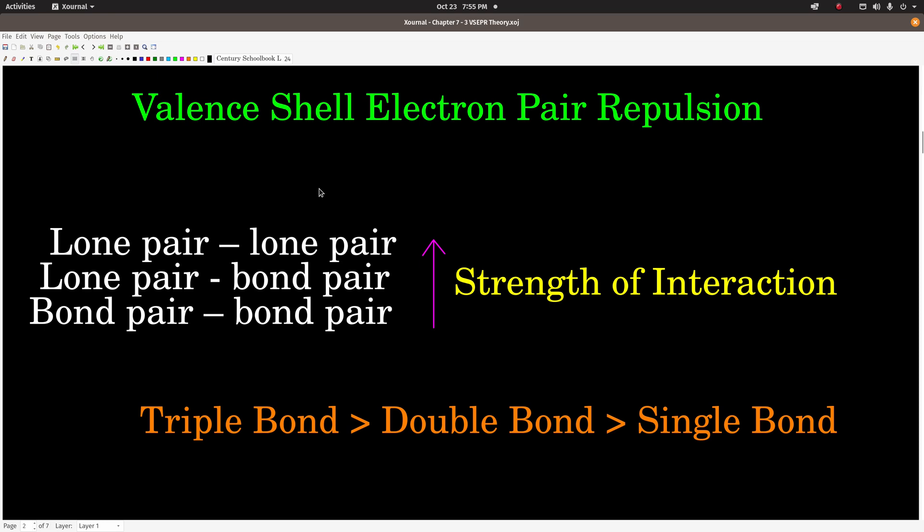Just to sort of summarize the idea of VSEPR theory—Valence Shell Electron Pair Repulsion theory—is that when you have a molecule, you look at the central atom and the electron groups that are on that central atom are all repelling each other. They're pushing each other apart because they all have negative charges. This is just Coulomb's law.